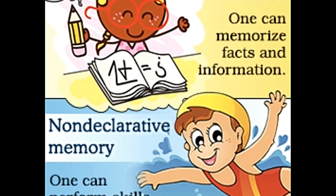Procedural memory doesn't encode in the hippocampus; instead, encoding takes place in other parts of the brain such as the putamen, caudate nucleus, cerebellum, and the motor cortex. Skills that are acquired are stored in the putamen, instincts are stored in the caudate nucleus, and the cerebellum manages timing and coordination. Example: performing martial arts, dancing, playing an instrument, etc.